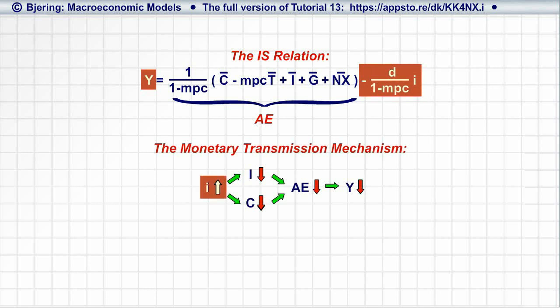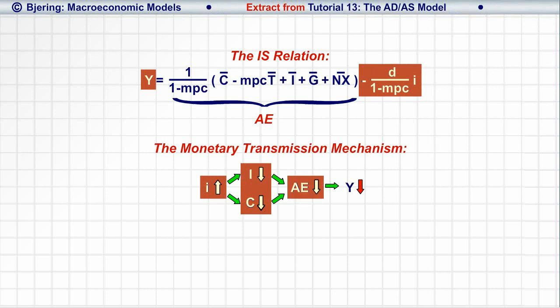That is, an increase in the interest rate decreases consumption and investment and, consequently, aggregate expenditure that, in turn, decreases equilibrium Y.